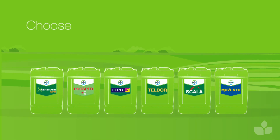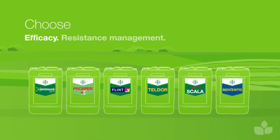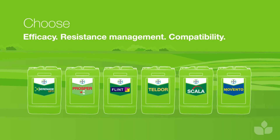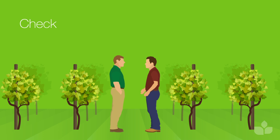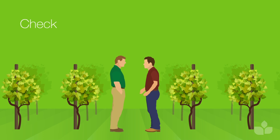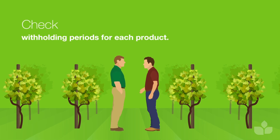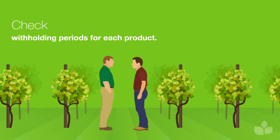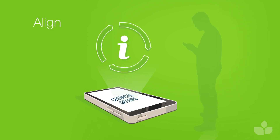The next step is to choose chemical control measures, based on efficacy, resistance management and compatibility, plus the required spray timings. Remember to check the label, then the winery or fruit purchaser and the DOG book for withholding periods for each product chosen and any other restrictions that might apply. And don't forget to ensure rotation of chemical groups aligns with resistance management guidelines.